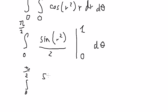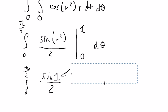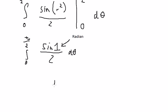We put 1 in here, 0 in here. So you got sine of 1 over 2. And this number 1 should be about radian. And we got the final answer.